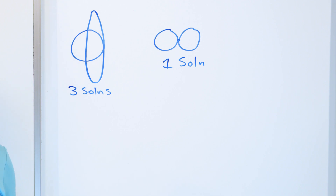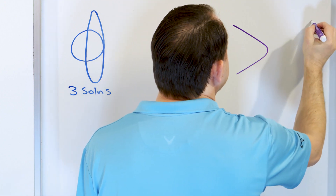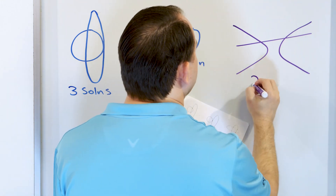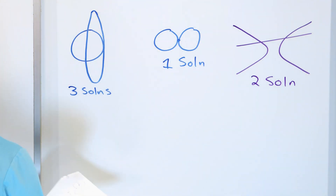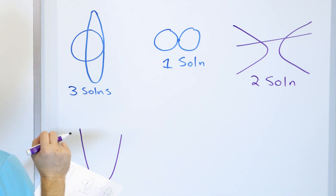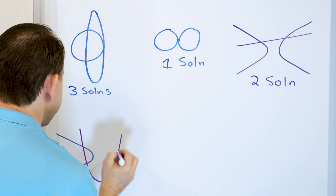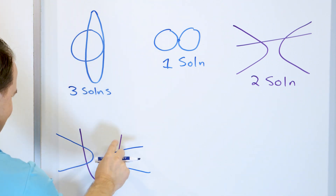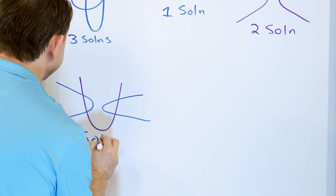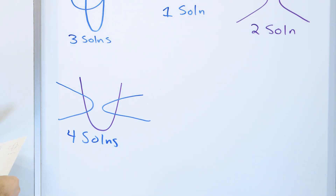We can also have hyperbolas mixed in. A hyperbola with a line cutting through it gives two solutions. What about a parabola plus a hyperbola? I can draw the hyperbola in and the parabola coming through — they can cross in four locations, giving four solutions.